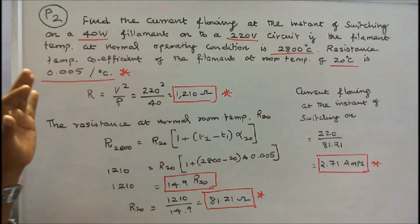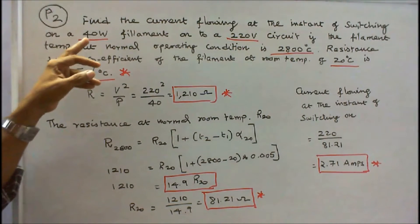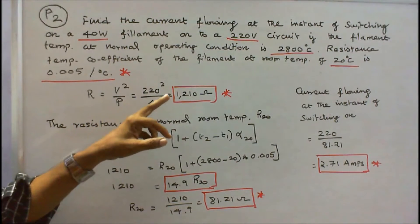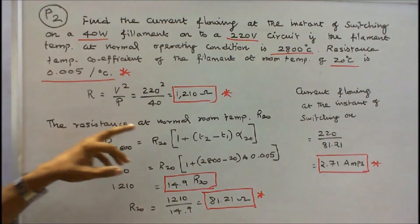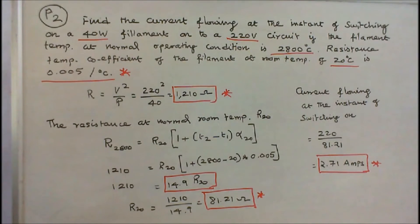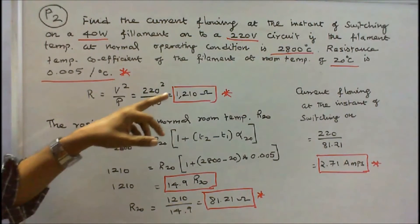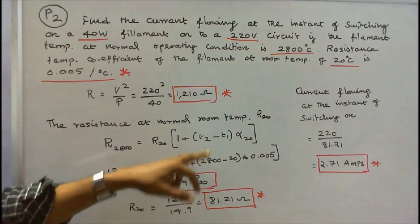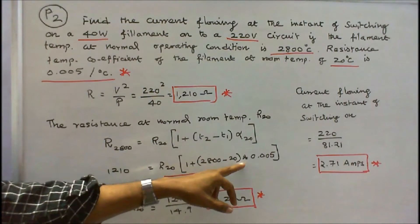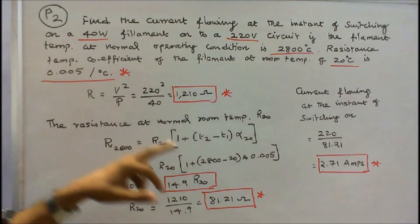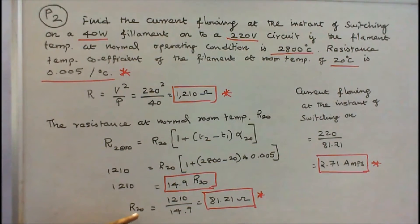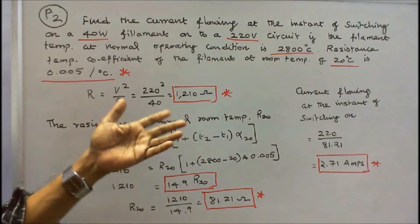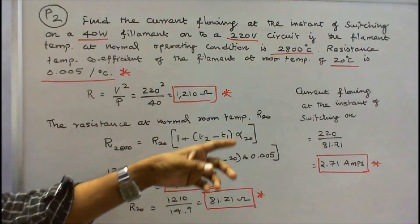We have to find the current flowing at the instant of switching on. Power is 40 watts and voltage is 220 volts. R equals V squared by P, which gives 1210 ohms — that is the resistance at 2800 degree centigrade. Using the formula: resistance at 2800°C equals R20 into 1 plus alpha into (T2 minus T1), with T2 equal to 2800, T1 equal to 20, and alpha equal to 0.005, we find resistance at 20 degree centigrade equal to 81.21 ohms. From voltage and this resistance, the current flowing at the instant of switching on is equal to 2.7 amps.